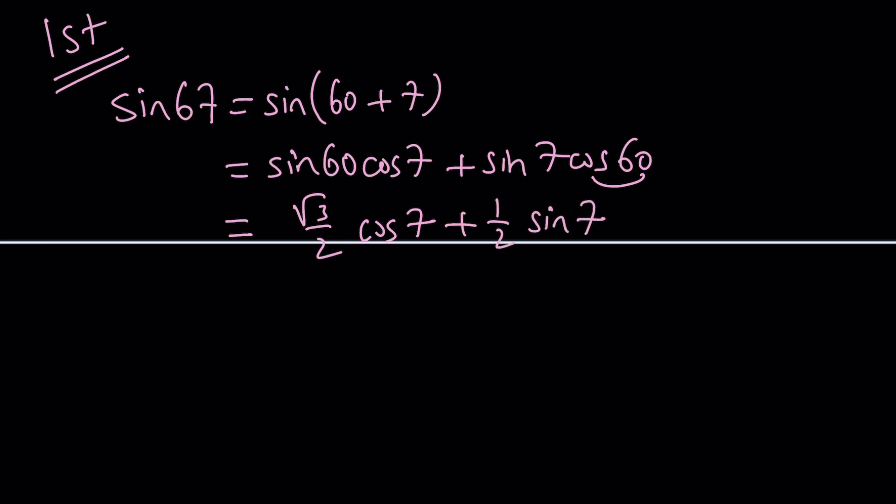So we got a linear combination of sine 7 and cosine 7. Make sense?